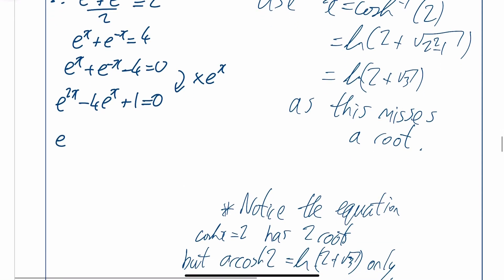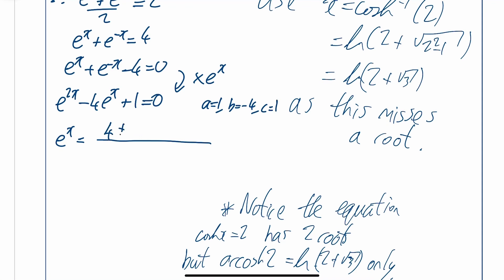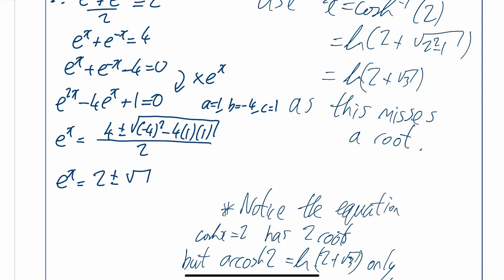Using the quadratic formula on this quadratic in e to the x, with a equals 1, b equals minus 4, and c equals 1: e to the x equals 4 plus or minus the square root of 16 minus 4, all over 2. Working that out, e to the x equals 2 plus or minus root 3. Therefore x equals ln of (2 plus or minus root 3), giving two roots. We would have missed ln of (2 minus root 3) had we used the inverse function directly.